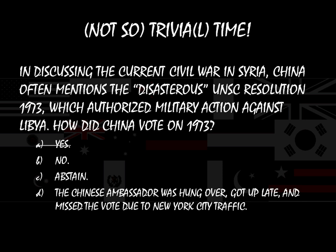China has veto power on the Security Council, so if they really don't like a resolution, they can vote no and ensure that the resolution will not pass. So it doesn't make sense for them to abstain, theoretically, because they could just vote no to ensure it doesn't pass, as opposed to abstaining, which leaves it to the other members to pass it on their own. So you would think that no is going to be better than abstain, which means abstention is not going to be the answer either.